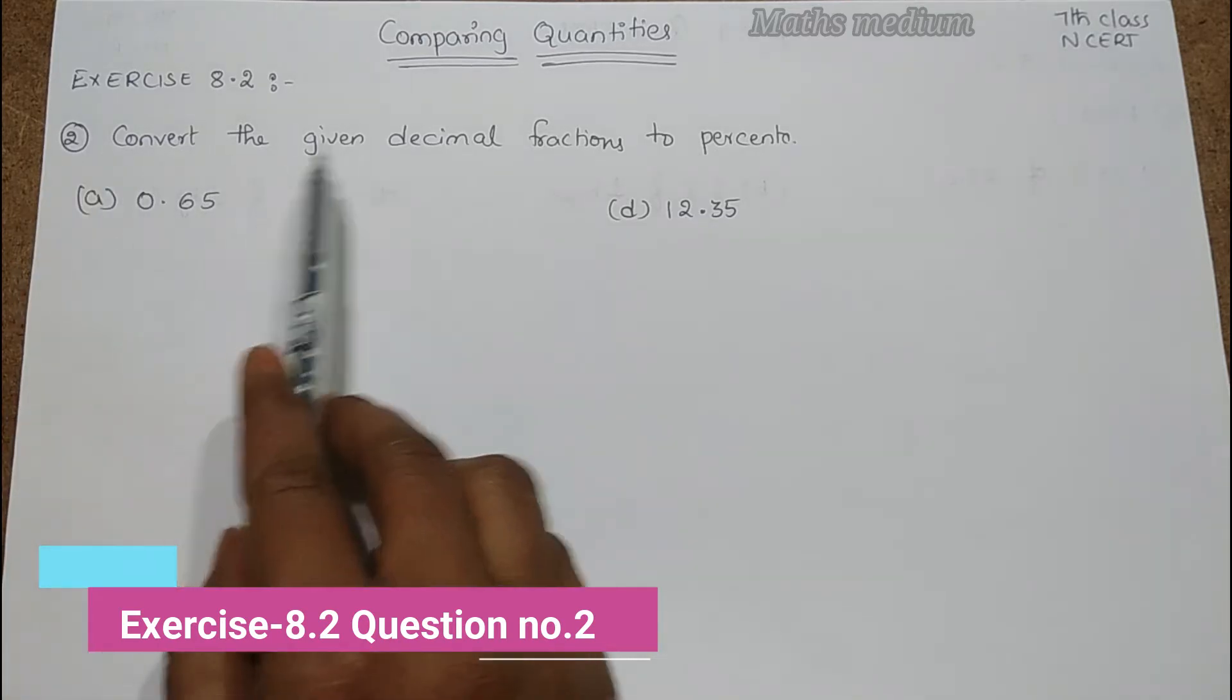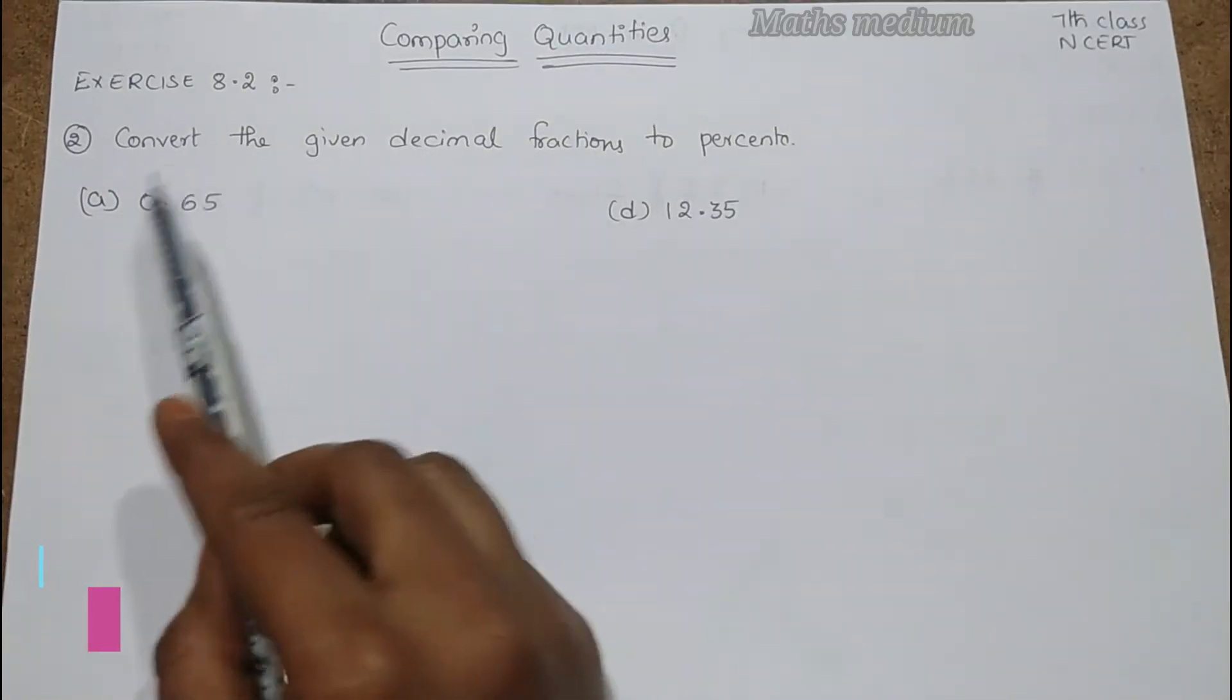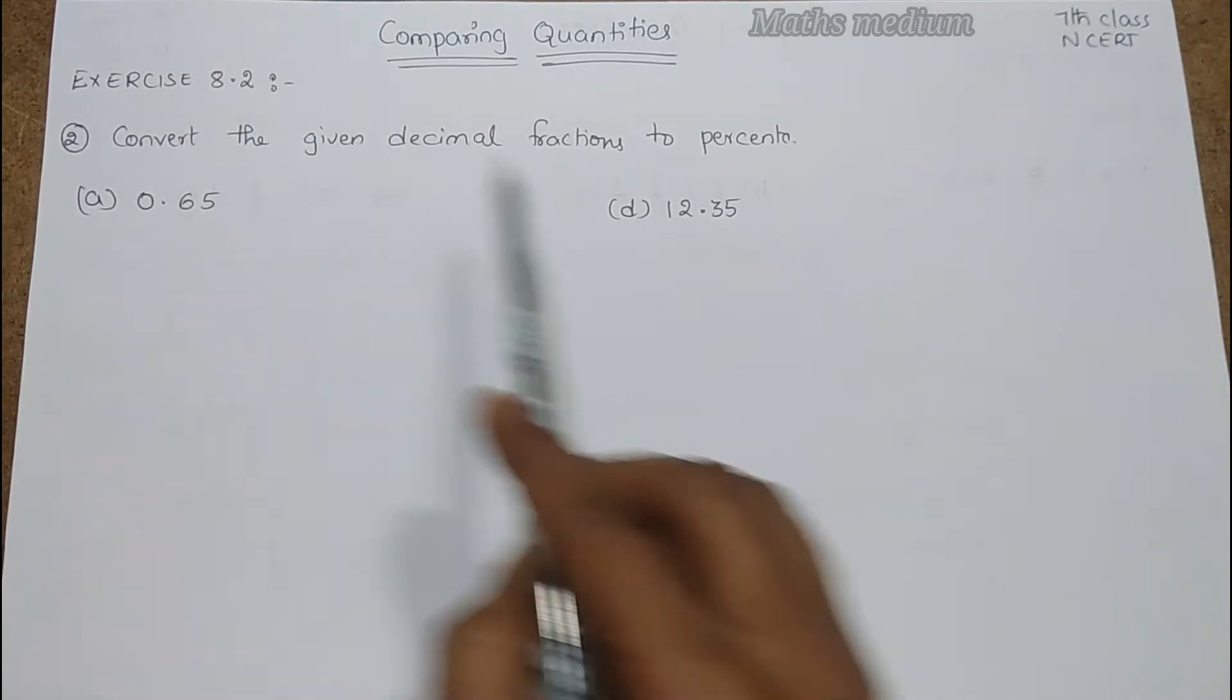Question number 2. Convert the given decimal fractions to percent. So here is 0.65 and 12.35.